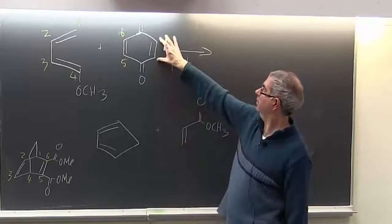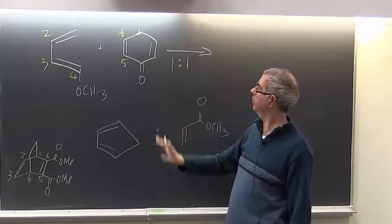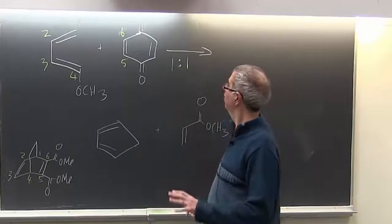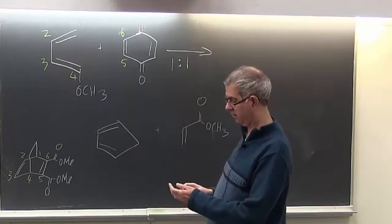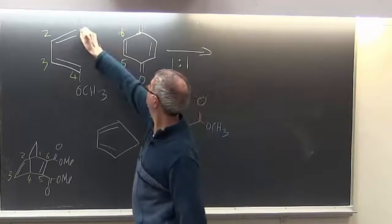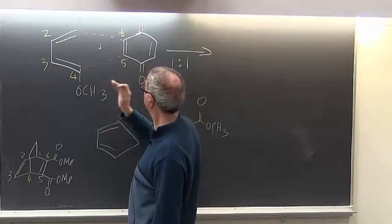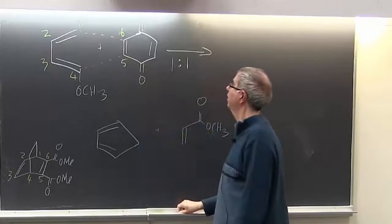Because we actually have a second double bond here that could possibly react further. But let's just keep it simple and have a one-to-one ratio. This one here is going to form a bond to here, this bond to here, and we'll get this product.